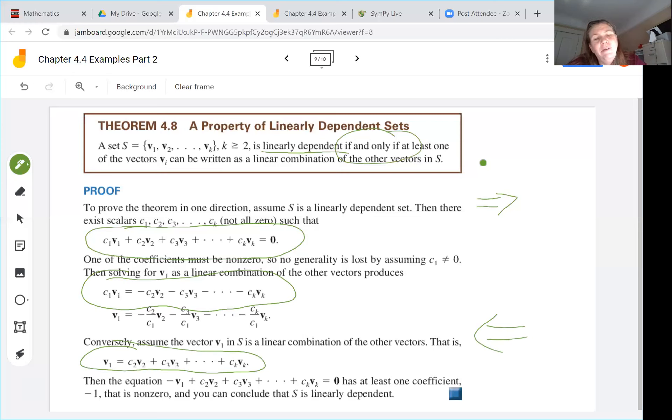Then if we bump V1 to the other side by subtracting it then we get this equation negative V1 plus all the other C2 V2 through Ck Vk added up there equals zero. And so there's at least one coefficient, the negative one here on the V1 that's not zero, and you can conclude then that S is linearly dependent because it meets that definition.